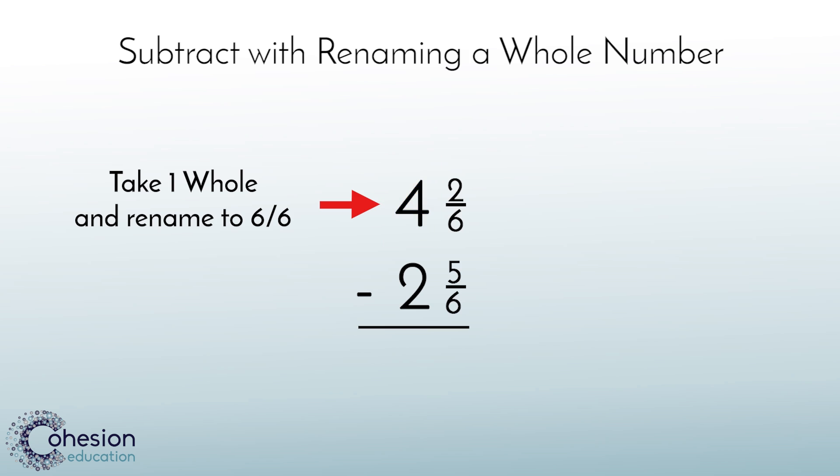I need to take one of my wholes and turn it into 6 sixths. If I take one whole away to break it into fractions, that changes my whole number from 4 to 3. Now I have the 6 sixths from the whole plus the 2 sixths from the fractional part of my mixed number. I need to add those two together to equal 8 sixths.